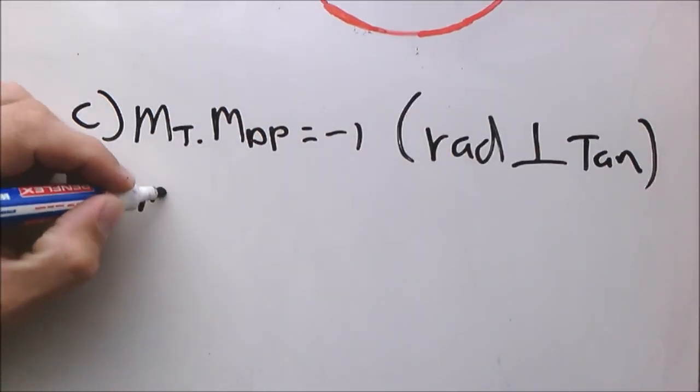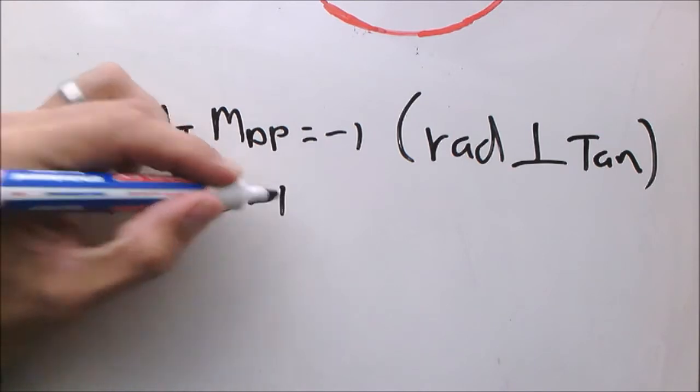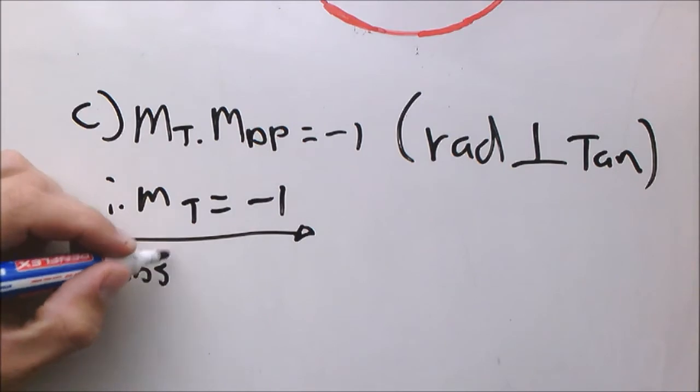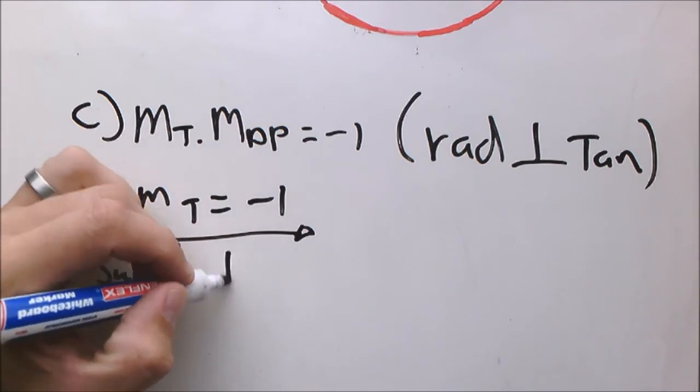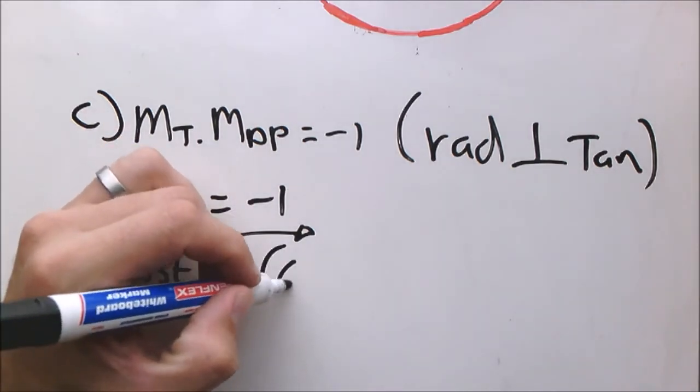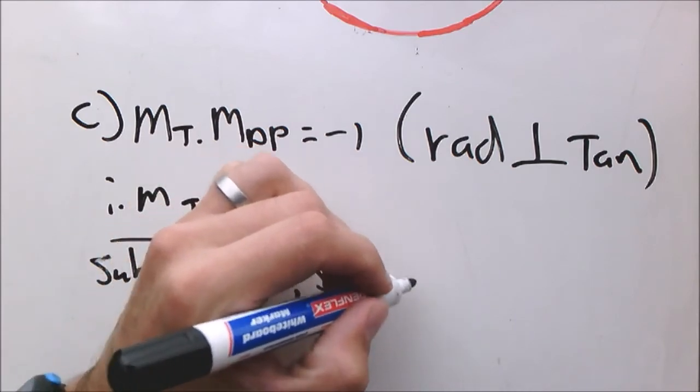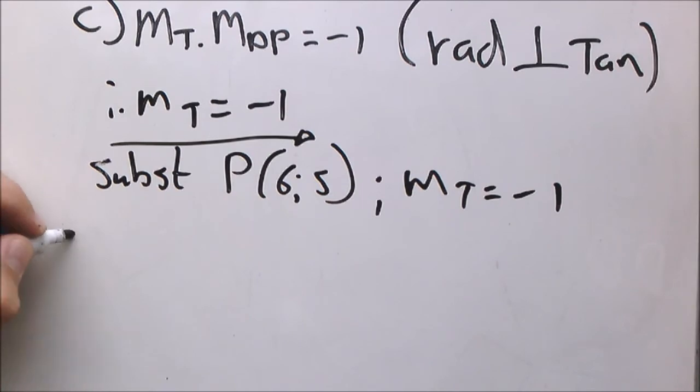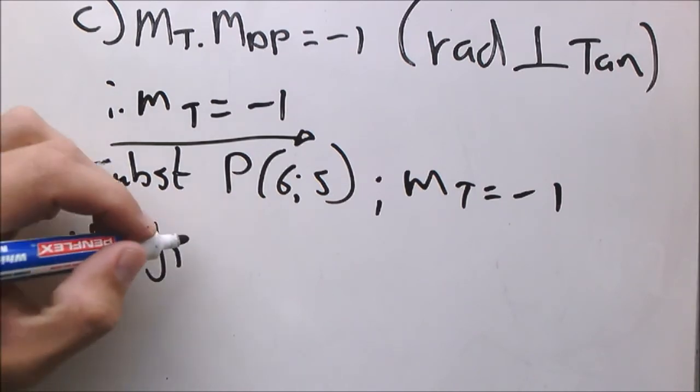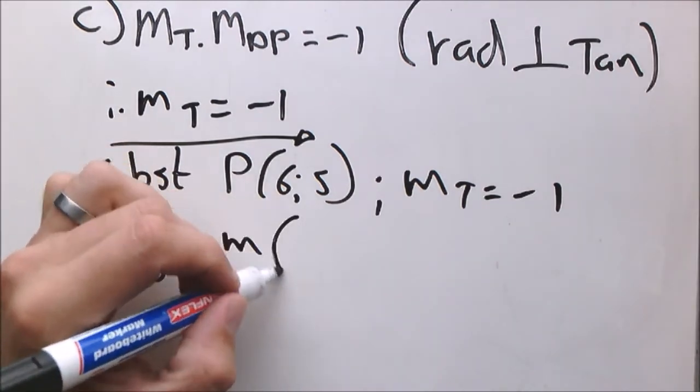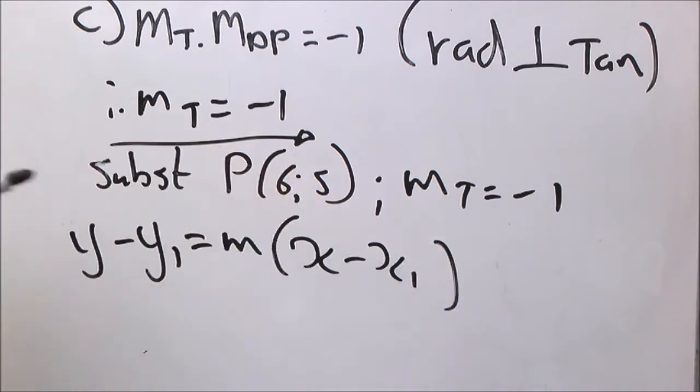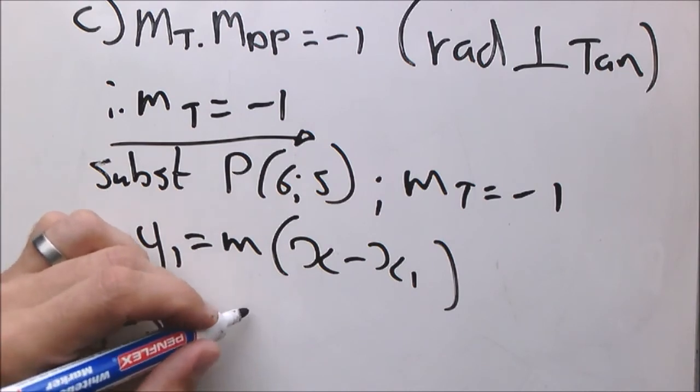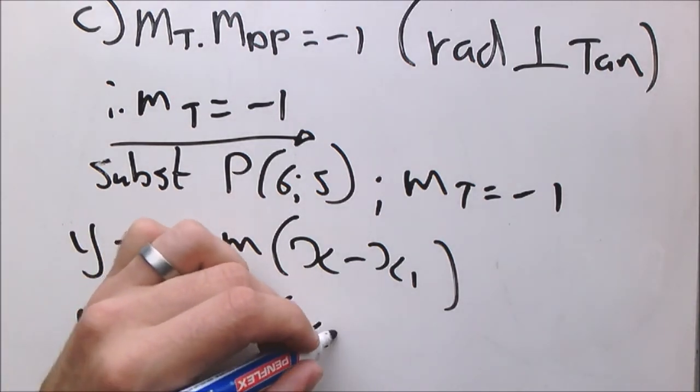From here on we can calculate that the gradient will be negative 1, and now we're going to do substitution of point P and the gradient into the following format: y minus y1 equals m times x minus x1. So y minus 5 equals negative 1 times x minus 6.